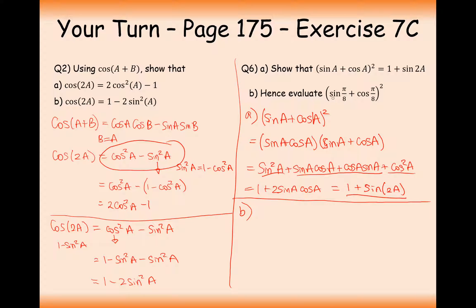Part B: evaluate (sin(π/8) plus cos(π/8)) squared. Using the result above, plug in a equals π/8 to get 1 plus sin(2 times π/8), which is 1 plus sin(π/4). Since π/4 is 45 degrees, the answer is 1 plus root 2 over 2.